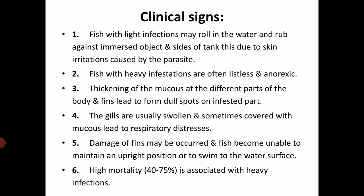Clinical signs: fish with light infection may roll in the water and rub against immersed objects and the sides of the tank, due to skin irritation caused by the parasite. Fish with heavy infestation are often listless and anorexic. Thickening of the mucus at different parts of the body and fin leads to dull spots on the infested part. The gills are usually swollen and sometimes covered with mucus, leading to respiratory distress. Damage of fins may occur and fish become unable to maintain an upright position or to swim to the water surface. High mortality, 40–75%, is associated with heavy infestation.